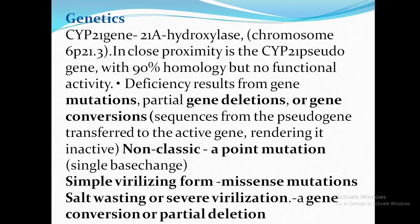Regarding genetics, the most common gene implicated is CYP21, which codes for 21-alpha hydroxylase. The CYP21 pseudogene lies very close to the CYP21 gene and has 90% homology but no functional activity. When sequences from the pseudogene are transferred into the active gene, it makes the active gene inactive — this is called gene conversion. Alternatively, you can have gene mutation or gene deletion. In the non-classic form, a point mutation occurs.